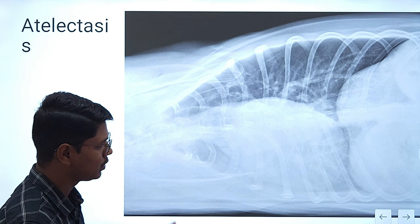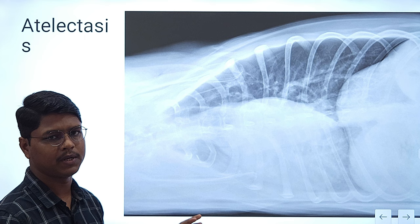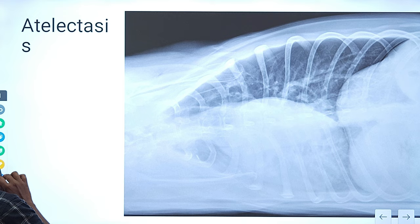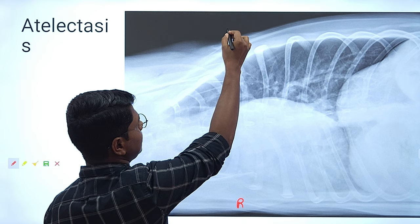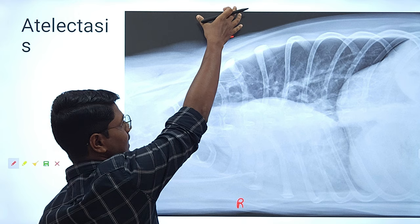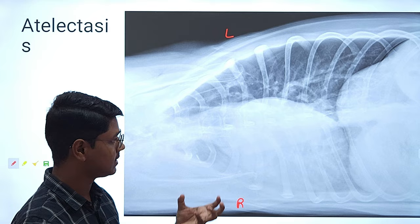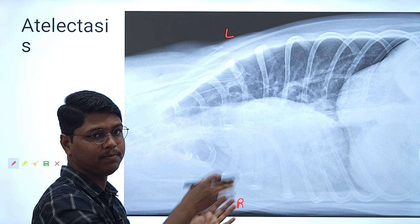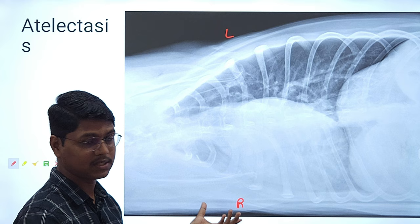Before going to actual interpretation of the thoracic radiograph, you should know a phenomenon known as atelectasis. This x-ray is in right lateral recumbency — this is the right side and this is the left side. This x-ray was supposed to be taken vertically, but to make you understand what atelectasis is and how it happens, we have made the beam horizontal. This is a picture from the Thrall radiology book.